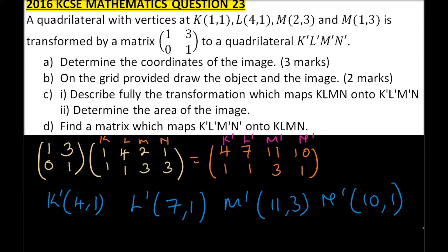That is how you get the coordinates of the image. For part b, on the grid provided, we need to draw the object and the image. We are going to use a grid to do that, copying these coordinates of the object and the coordinates of the image to draw both figures.